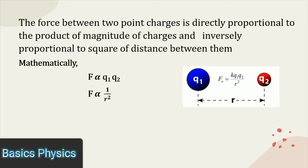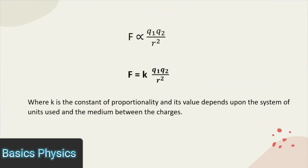Mathematically, force F is proportional to the product of Q1 and Q2. F is proportional to 1 over R square. Therefore, F is equal to K times Q1 Q2 divided by R square.